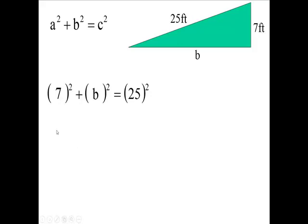Now 7 squared is what? 49. Plus B squared equals 25 times 25 is 625.